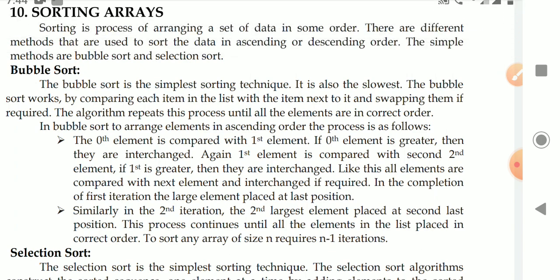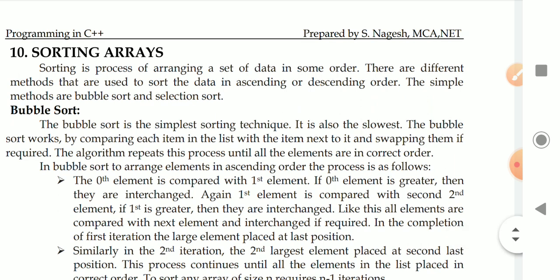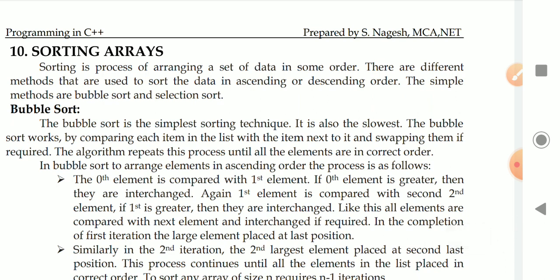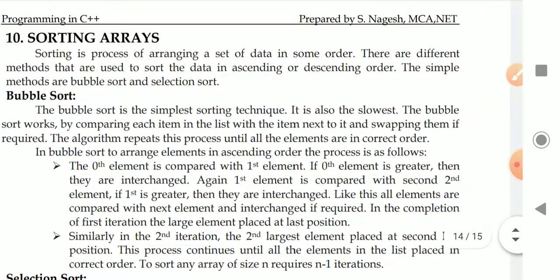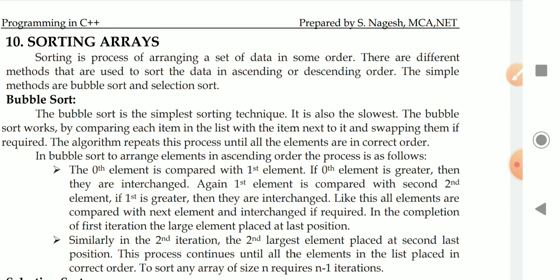In the previous class we discussed how arrays are useful in searching. Today we are going to discuss how arrays are useful for sorting. When we need to store multiple values in a single variable, we use the concept of arrays. For example, if I have 100 values of the same data type, these values need to be arranged in a particular order, either ascending or descending order. That is called sorting. Sorting is a process of arranging a set of data in some order.